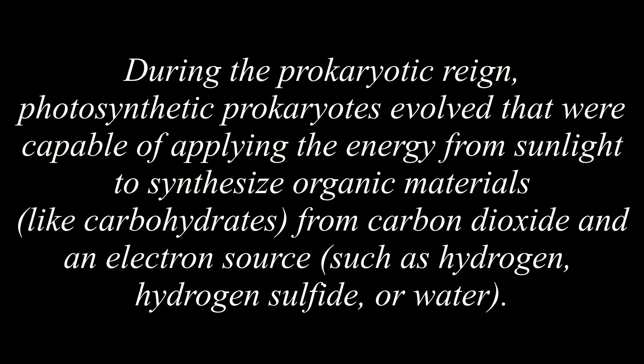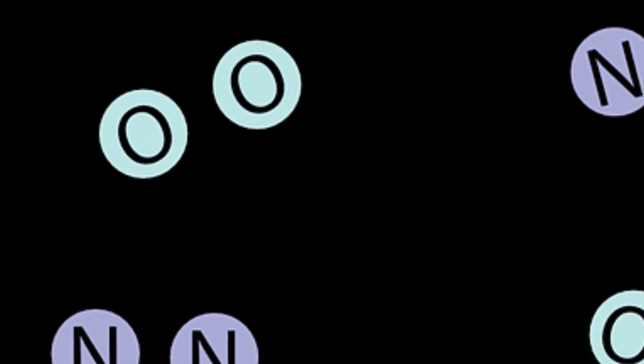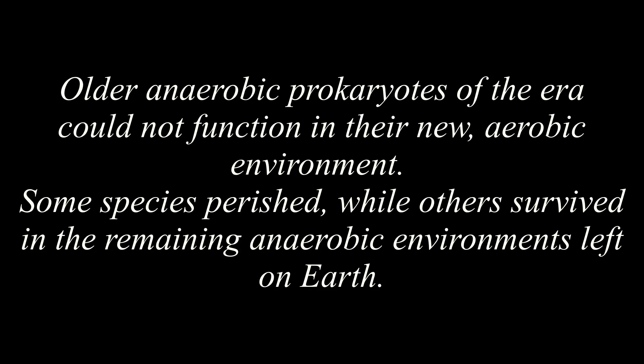During the prokaryotic reign, photosynthetic prokaryotes evolved that were capable of applying the energy from sunlight to synthesize organic materials like carbohydrates from carbon dioxide and an electron source such as hydrogen, hydrogen sulfide, or water. Photosynthesis using water as an electron donor consumes carbon dioxide and releases molecular oxygen, O2, as a byproduct. The functioning of photosynthetic bacteria over millions of years progressively saturated Earth's water with oxygen and then oxygenated the atmosphere, which previously contained much greater concentrations of carbon dioxide and much lower concentrations of oxygen.